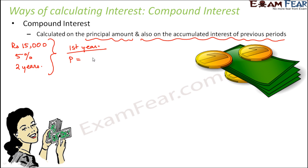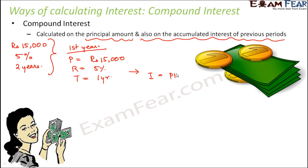In the first year, our principal is Rs. 15,000, the rate of interest is 5%, and the time period is one year. If we calculate simple interest using P × R × T ÷ 100, this comes out to be Rs. 750.